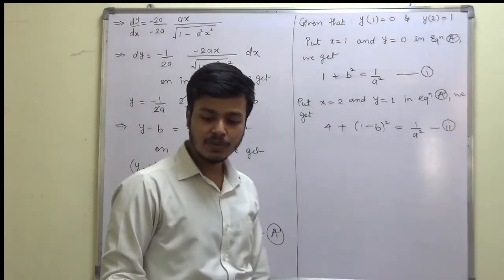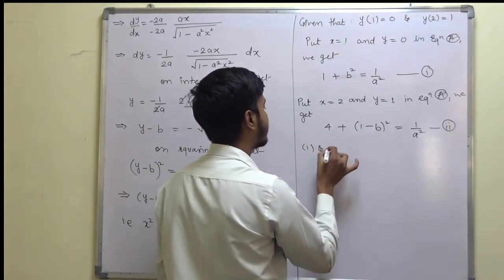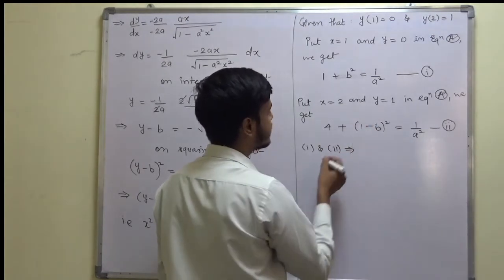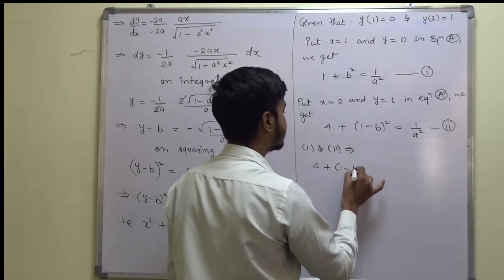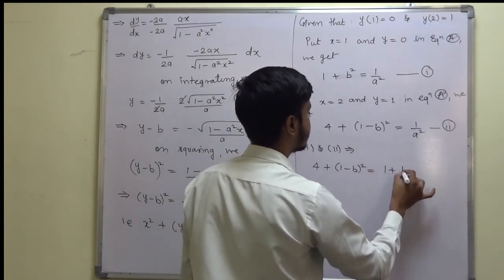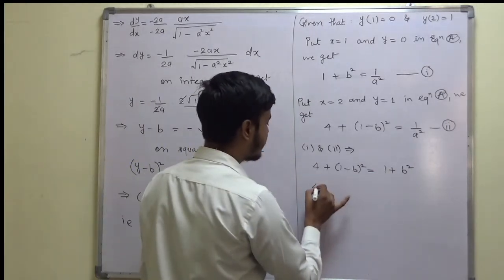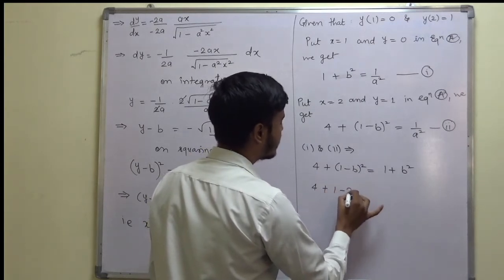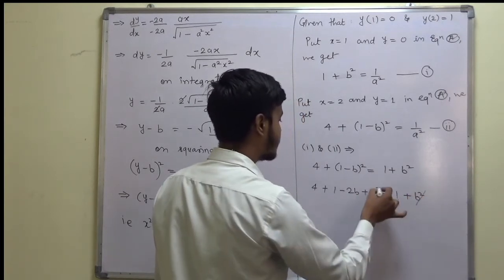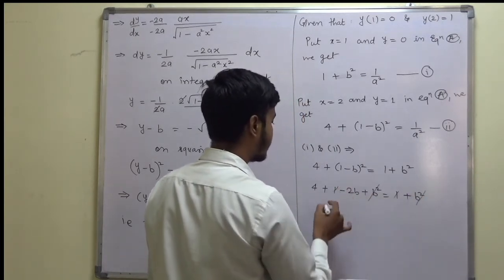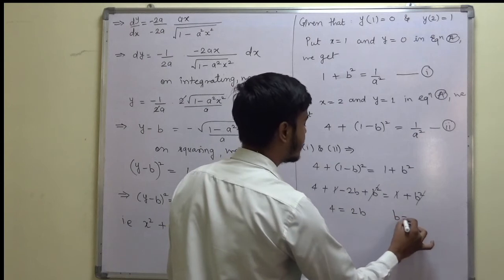Since the right-hand sides of equations (1) and (2) are equal, the left-hand sides must be equal: 4 + (1 − b)² = 1 + b². Expanding: 4 + 1 − 2b + b² = 1 + b². The b² terms cancel, giving 4 = 2b, so b = 2.